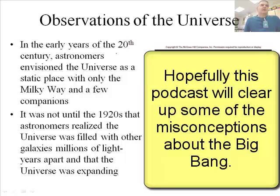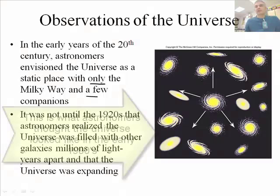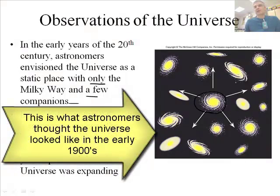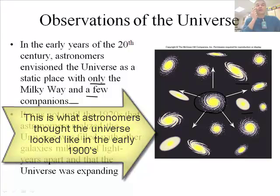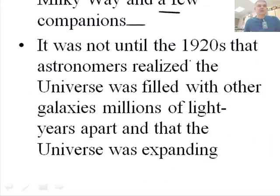In the early years of the 20th century, astronomers envisioned the universe as a static place with only the Milky Way and a few companions. So we thought, okay, there's the Milky Way galaxy and we've got a few companions. That's kind of what they thought, early 20th century, that's like around 1900s. But then around the 1920s, they realized the universe was filled with other galaxies, millions of light years apart, and the universe was expanding.